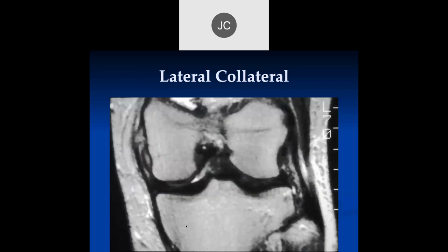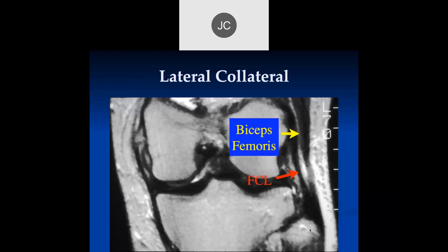If we start on the lateral side, there's an old coronal image, and here we can see the lateral collateral ligament or fibular collateral ligament. Often, you cannot see it on just one cut. Because the coronal plane and the fibular collateral ligament are slightly obliqued to one another, the proximal part will be anterior and the distal part will be more posterior. But here we can see the origin of the lateral collateral ligament from the lateral fibular epicondyle coming down to combine with the biceps femoris tendon to produce the conjoint tendon, which then attaches to the fibular head.